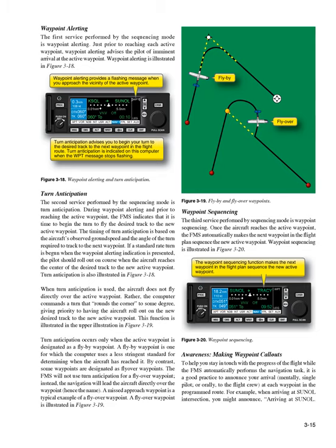Waypoint alerting: the first service performed by the sequencing mode is waypoint alerting. Just prior to reaching each active waypoint, waypoint alerting advises the pilot of imminent arrival at the active waypoint. Turn anticipation: the second service performed by the sequencing mode is turn anticipation. During waypoint alerting and prior to reaching the active waypoint, the FMS indicates that it is time to begin the turn to fly the desired track to the new active waypoint. The timing of turn anticipation is based on the aircraft's observed ground speed and the angle of the turn required to track to the next waypoint. If a standard rate turn is begun when the waypoint alerting indication is presented, the pilot should roll out on course when the aircraft reaches the center of the desired track to the new active waypoint.